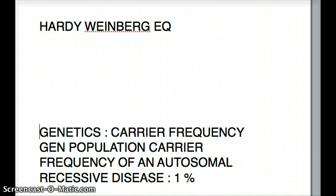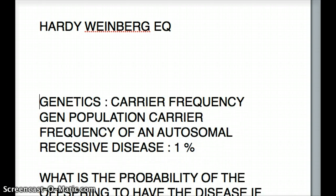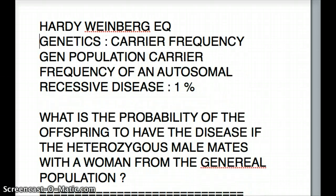So let's talk about this question. We're talking about an autosomal recessive disease, and in the general population the frequency of the disease is 1%. The question is: a heterozygous male is going to mate with a female from the general population — what is the probability that the offspring is going to be affected by the disease?